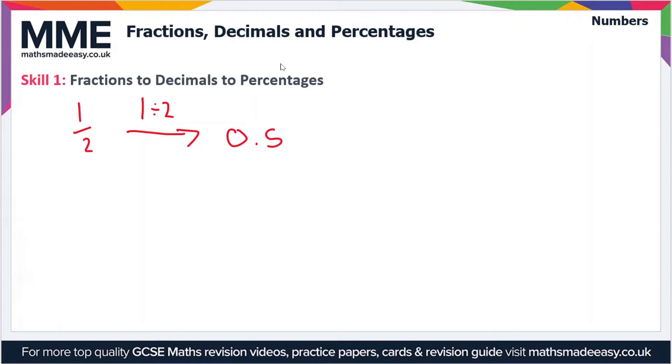So the decimal one half is equal to 0.5, and then if we want to convert this to a percentage we just times by 100. We're moving the decimal point two spaces to the right here which gives us 50 percent.